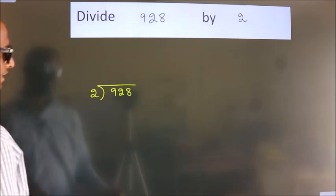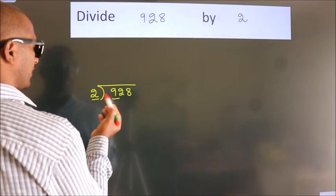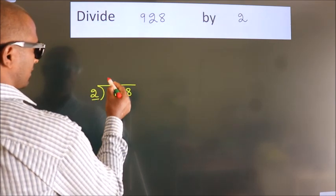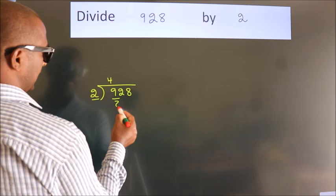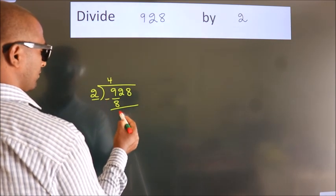Next, here we have 9, here 2. A number close to 9 in 2 table is 2 fourths, 8. Now, we should subtract. We get 1.